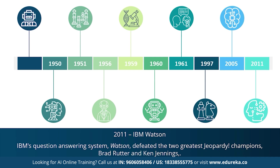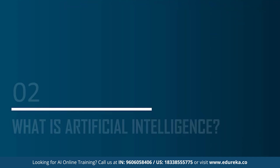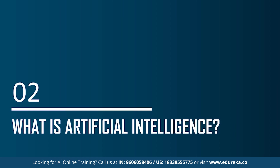Since the emergence of artificial intelligence in the 1950s, we have seen exponential growth in its potential. AI covers domains such as machine learning, deep learning, neural networks, natural language processing, knowledge base, expert systems, and so on. Now that you know a brief history of AI, let's move on and understand what exactly artificial intelligence is.